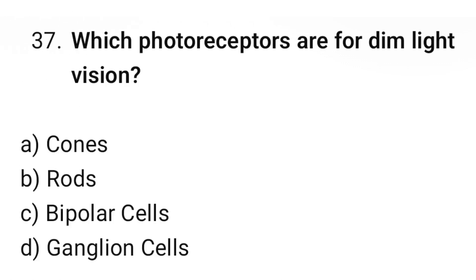Question number 37: Which photoreceptors are for dim light vision? The correct option is B. Rods.